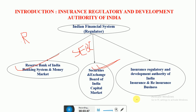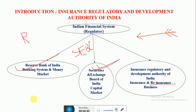Reinsurance means suppose a company has insured a hundred policyholders. If all hundred policyholders put in a claim at the same time, the insurance company may not be sure it can meet all those claims. So the insurance company itself takes an insurance policy from another insurance company, so that in the event of uncertainty it is able to meet those claims.